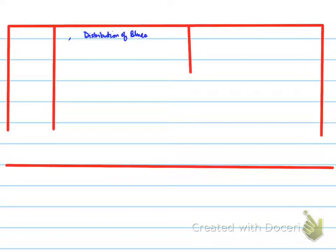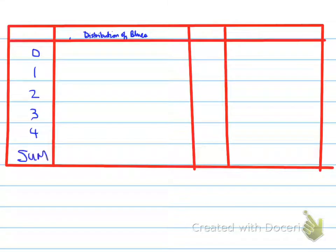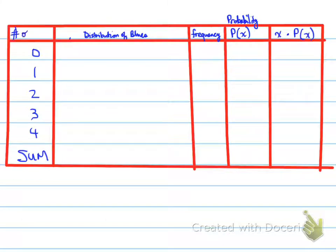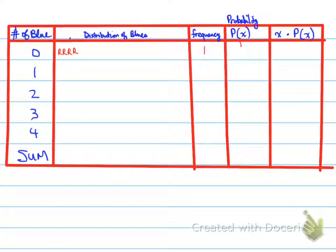Let's look at a table showing the distribution of blues, from 0 to 4, with columns for number of blues, frequency, probability, and x times P(x). To get zero blues you need red, red, red, red — that only occurs once out of 16 possibilities, so P(x) = 1/16, and x times P(x) = 0 × 1/16 = 0.